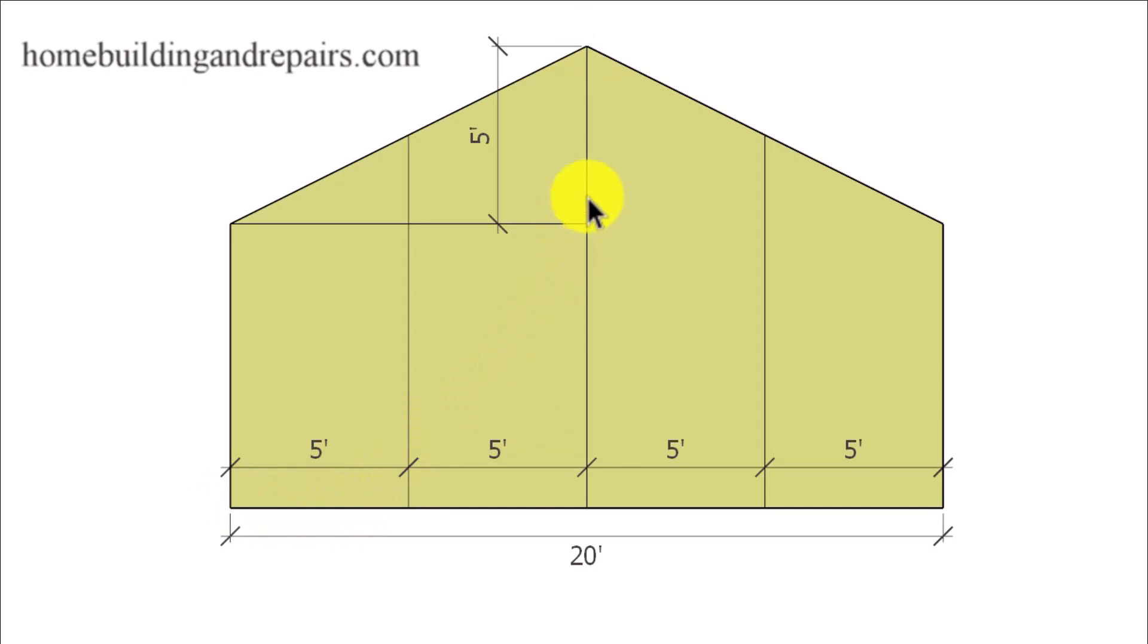So one quarter of the span equals the height of the ridge off of the top of the framing plates or beams or whatever you're going to be using to represent the top of your wall framing.